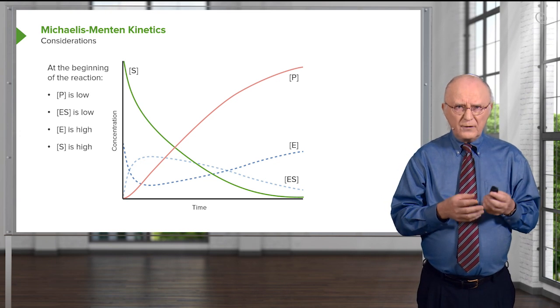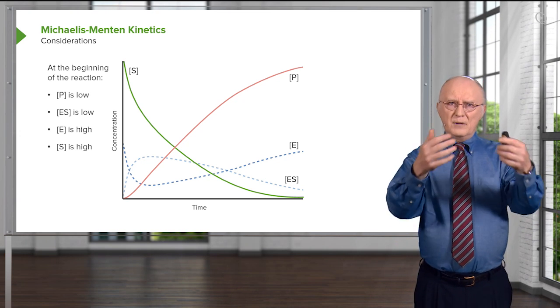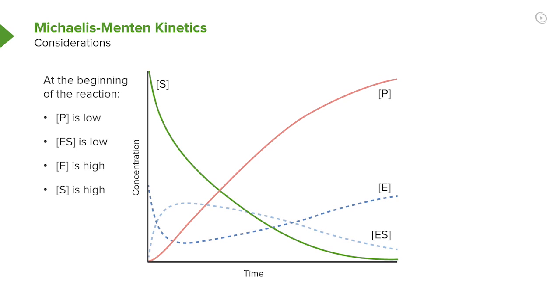Well, we have four different things to think about that can be measured. We have the concentration of substrate. We have the concentration of the enzyme. We have the concentration of the enzyme-substrate complex. And ultimately, we're going to have concentration of product, which is what we're interested in studying.